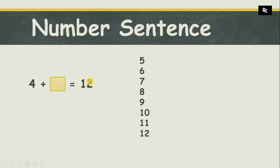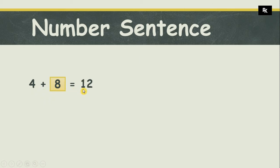Let's count them: one, two, three, four, five, six, seven, eight. After four, I counted eight numbers that give me twelve. So if I write eight in this blank it will make my number sentence complete. Four plus eight is equal to twelve.